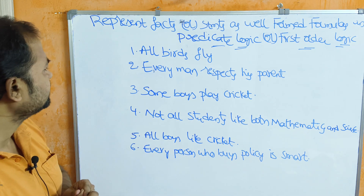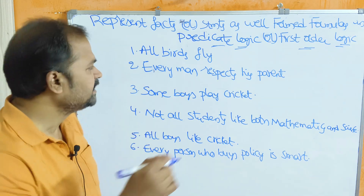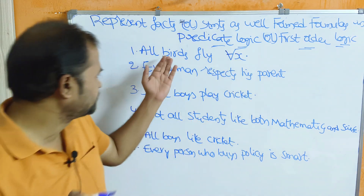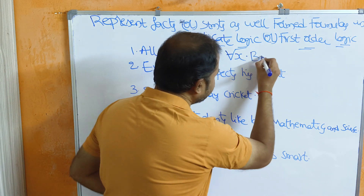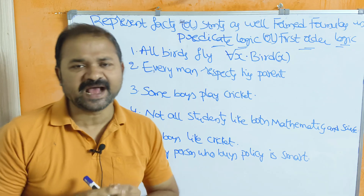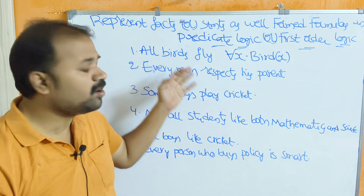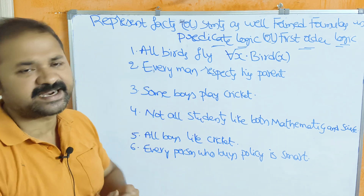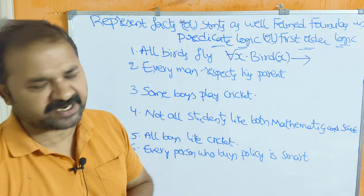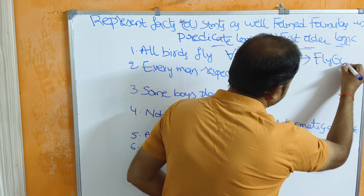First statement: all boats fly. If the sentence contains 'all', then we have to use the universal quantifier — for all X. So we write boat(X). If the sentence contains 'all', then we have to use the implication symbol. If there are 10 boats, then all 10 boats will fly. So, fly(X) — every boat will fly.